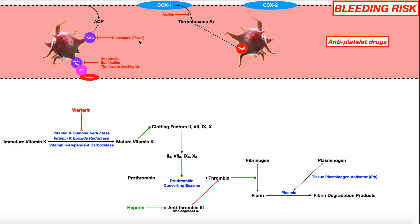One important thing about Plavix is that about 50% of individuals have a genetic polymorphism that renders it useless — meaning it will have no action on this receptor at all. This is a case where pharmacogenomics becomes extremely important, because you don't just want to be giving this drug and chancing it to see if it'll work. In a lot of patients it does not work due to a genetic difference that prevents it from working, so you'd want to do a genetic screen to make sure Plavix is even going to work in the first place.